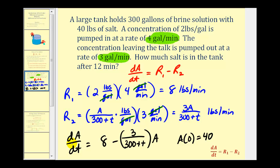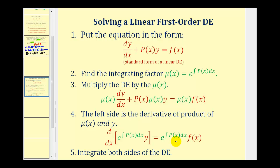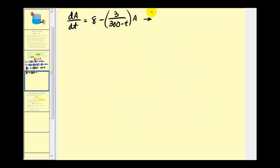Now we'll go ahead and solve this using an integrating factor. The first step will be to write this in standard form. You may want to pause the video on this slide to review how to solve a linear equation using an integrating factor, where P of X is the coefficient of our function Y, or in our case the function A. To write this in standard form, I'm going to add this quantity to both sides of the equation. So we'd have dA/dt plus three divided by (300 plus T) times A equals eight.